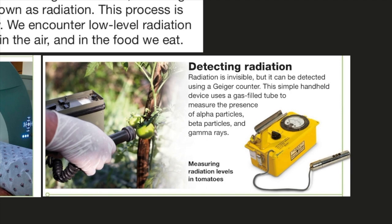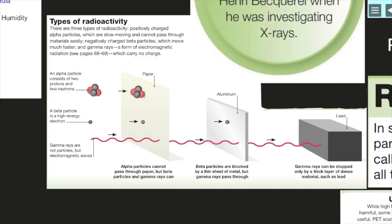Detecting radiation. Radiation is invisible, but it can be detected using a Geiger counter. This simple handheld device uses a gas-filled tube to measure the presence of alpha particles, beta particles, and gamma rays, all forms of radioactivity.